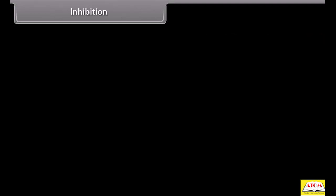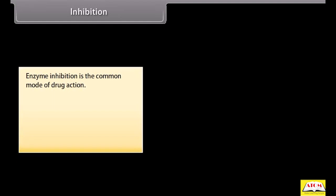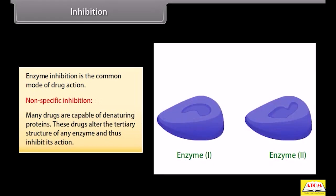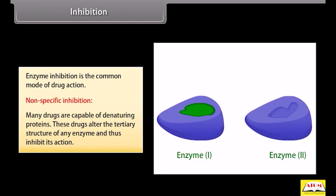Enzyme inhibition is the common mode of drug action. Non-specific inhibition: many drugs are capable of denaturing proteins. These drugs alter the tertiary structure of an enzyme and thus inhibit its action. For example, heavy metal salts, alcohol, formaldehyde and phenol inhibit enzymes non-specifically.